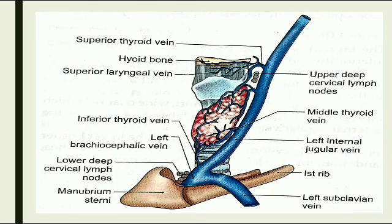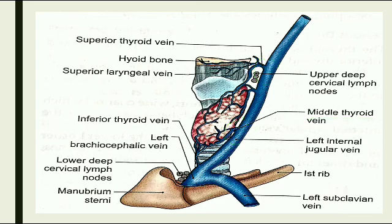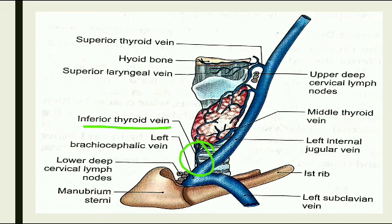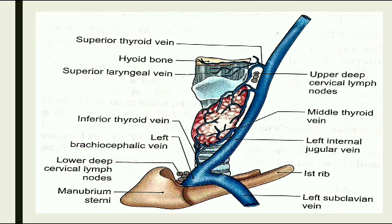In the diagram, the superior thyroid vein and middle thyroid vein both enter the internal jugular vein, while the inferior thyroid vein enters the left brachiocephalic vein.